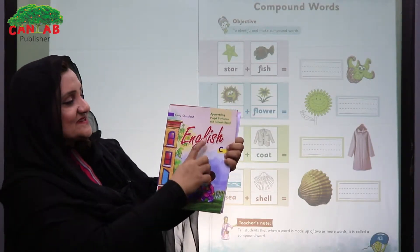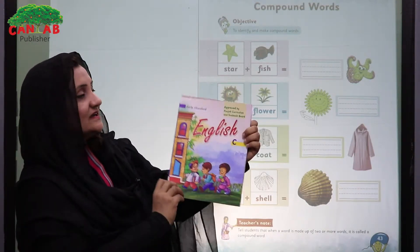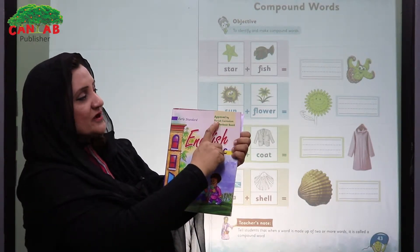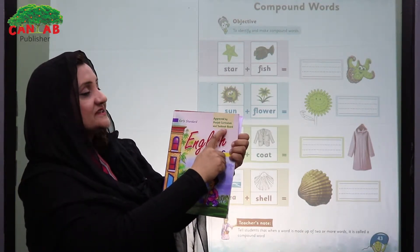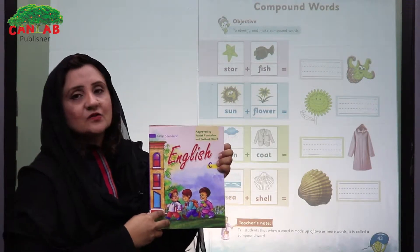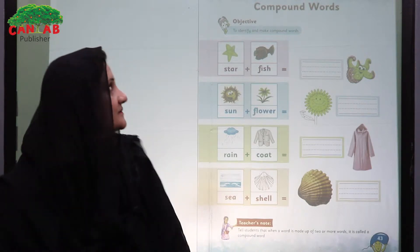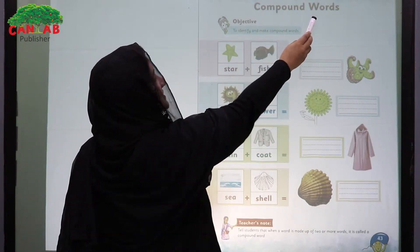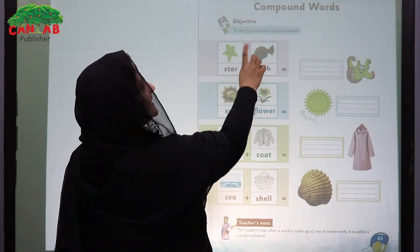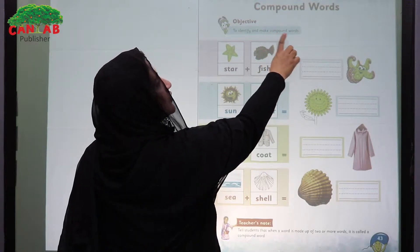Bismillahirrahmanirrahim. Early Standard English C by Cantab publisher. Remember that all the books of Cantab are approved by Punjab Curriculum and Textbook Board, and our slogan is 'One Curriculum, One Nation.' Our today's topic is compound words, and the objective given in the book is to identify and make compound words.